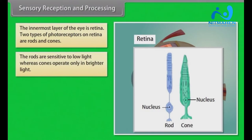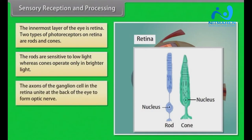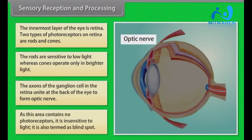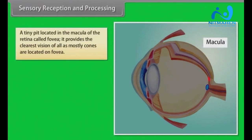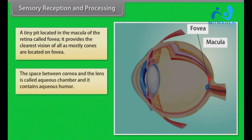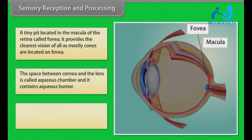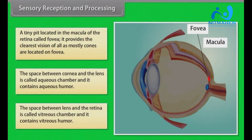The innermost layer of the eye is the retina. Two types of photoreceptors on the retina are rods and cones; rods are sensitive to low light, whereas cones operate only in brighter light. The axons of the ganglion cells in the retina unite at the back of the eye to form the optic nerve. This area contains no photoreceptors and is insensitive to light, termed the blind spot. A tiny pit in the macula called the fovea provides the clearest vision, as mostly cones are located there. The space between the cornea and lens is called the aqueous chamber and contains aqueous humour; the space between the lens and retina is the vitreous chamber, containing vitreous humour.